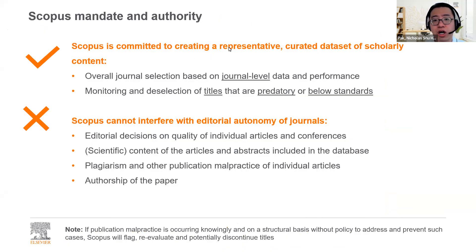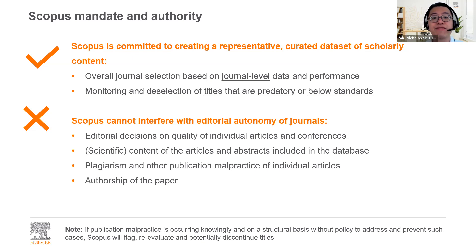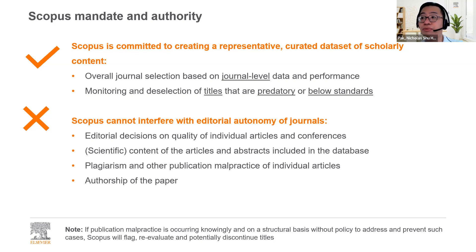We understand there are a lot of queries regarding predatory journals recently in Malaysia. Scopus is committed to creating a representative, curated dataset of scholarly content. Journal selection is based on journal-level data and performance, and we monitor and deselect titles that are predatory or below standards. One thing we can't do is intervene with the editorial autonomy of journals — we cannot intervene on a behavioral level. If there's plagiarism or publication malpractice, we cannot intervene in the authorship of a paper. If you notice publication malpractice, do let us know, and Scopus will flag, re-evaluate, and potentially discontinue predatory titles.